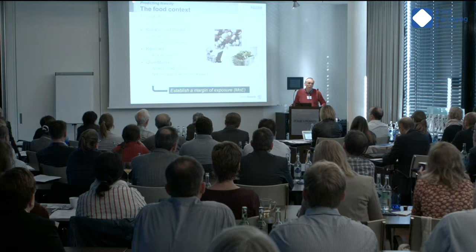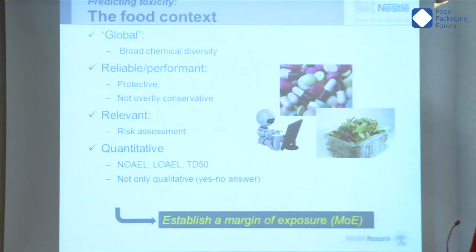The first and most important criterion is relevance — you need to predict something which is relevant for risk assessment, such as chronic toxicity or carcinogenic potency. Secondly, something important in the food sector is to have a quantitative prediction. Knowing that a chemical has a high probability to be neurotoxic, for instance, is not enough. What is important is to have a value that you can compare to exposure, because in the end it's really the combination of exposure and toxicology that allows you to make decisions.